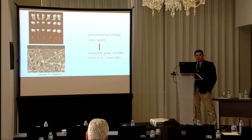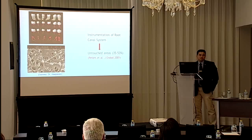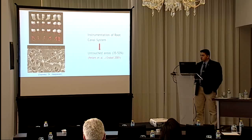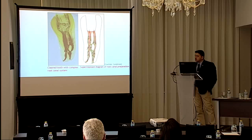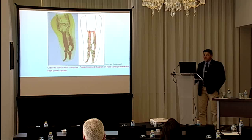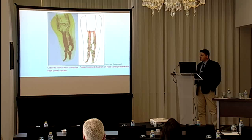Studies have shown that with either mechanical or rotary instrumentation, around 30 to 35 percent of the root canal system is untouched, mainly because of complex root canal morphology. Here we can see an SEM picture showing the root canal system untouched by instrumentation, with visible biofilm of microbes. Another image of a cleared tooth shows the complex morphology with apical deltas, ramifications, and lateral accessory canals. Hence the root canal morphology is very complex.